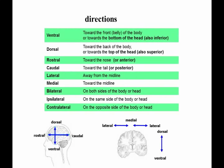Another way to name directions is anterior-posterior and inferior-superior, which are always relative to something else. For example, we have an anterior part of the cochlear nucleus as opposed to the posterior part. Also important: bilateral means on both sides of the body; ipsilateral means on the same side of the body; contralateral means on the opposite side of the body. We'll need that terminology when we follow the auditory nerve.